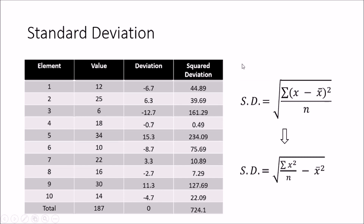Now I will explain how to calculate the equation. First we take x minus x-bar, which is the deviation of a value from the mean. If I take the sigma — the sum of all these deviations — I will get zero. This happens because we have positive and negative values that cancel each other out, so the total is going to be zero.